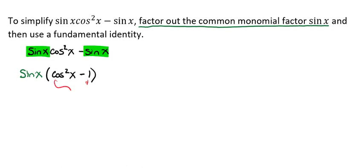So when we get here, we notice that we are so close. Because if we were to use the Pythagorean identity, 1 - cos²(x), that would give us sin²(x).